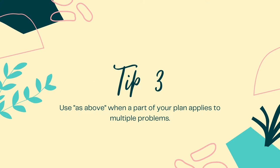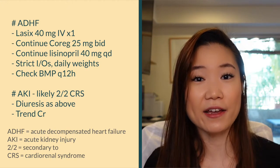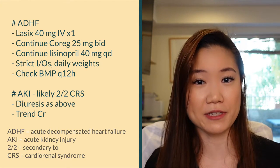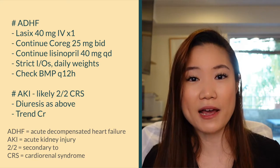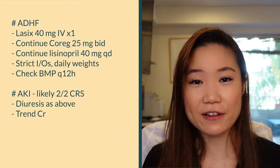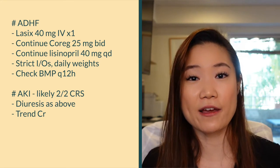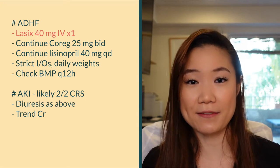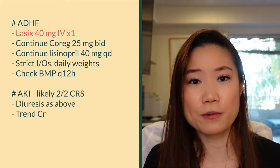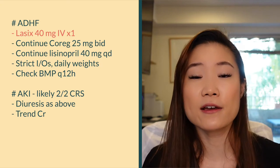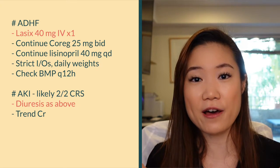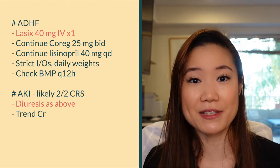Tip number three: use the words 'as above' if part of your plan applies to two different problems. For example, if a patient has heart failure and an AKI due to cardiorenal syndrome, diuresis applies to both. If you write 'Lasix 40 mg IV' under heart failure, then under AKI you can just write 'diuresis as above,' so you don't have to write or update it twice.